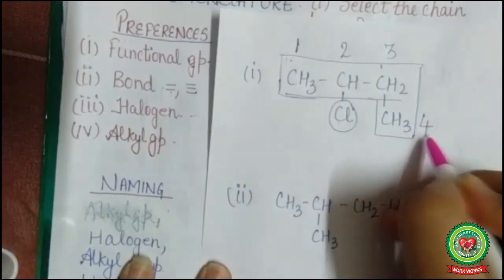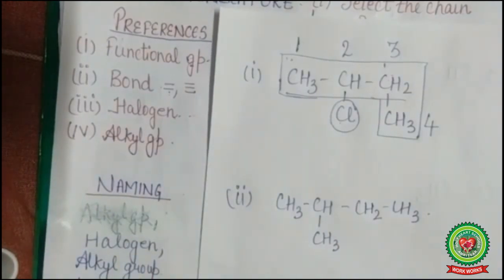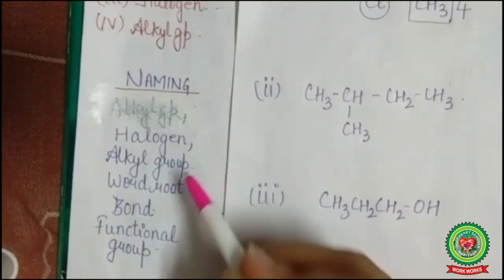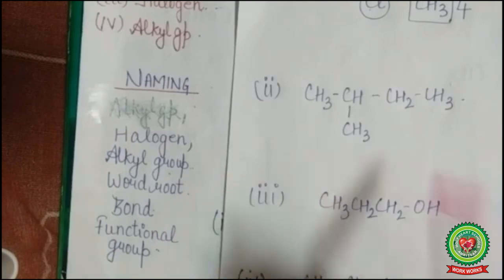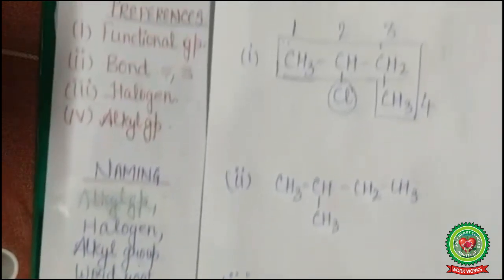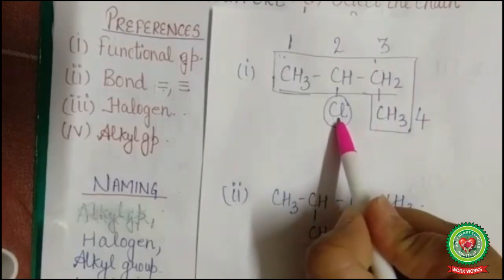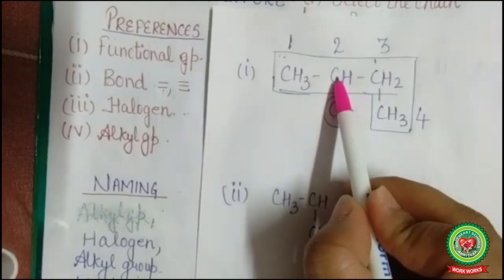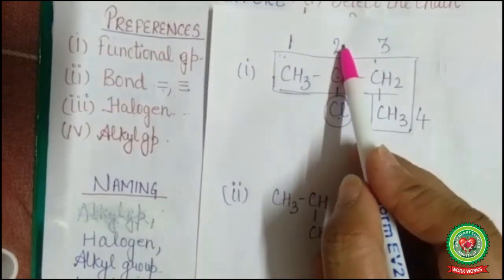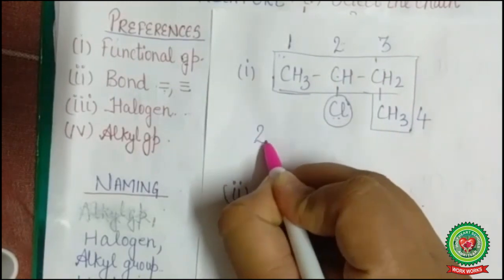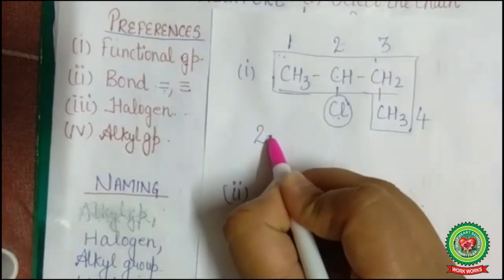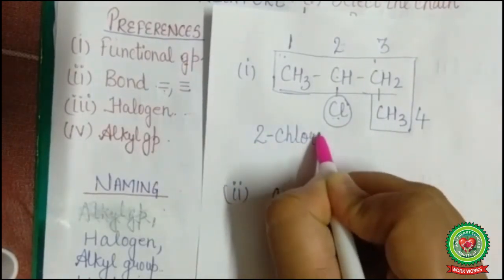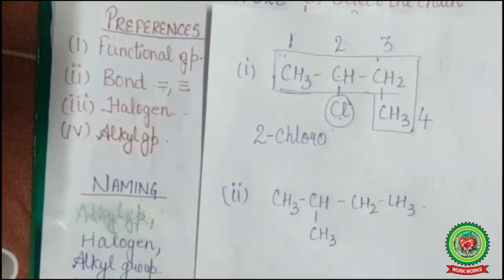Numbering: one, two, three, four — numbering done. Now for naming, the rule is: halogen, alkyl group, word root, bond, functional group. In this structure we have halogen. The name of the halogen here is 'chloro' and it is attached to carbon number two. So the name begins with '2-chloro' — meaning it is attached to the second carbon.